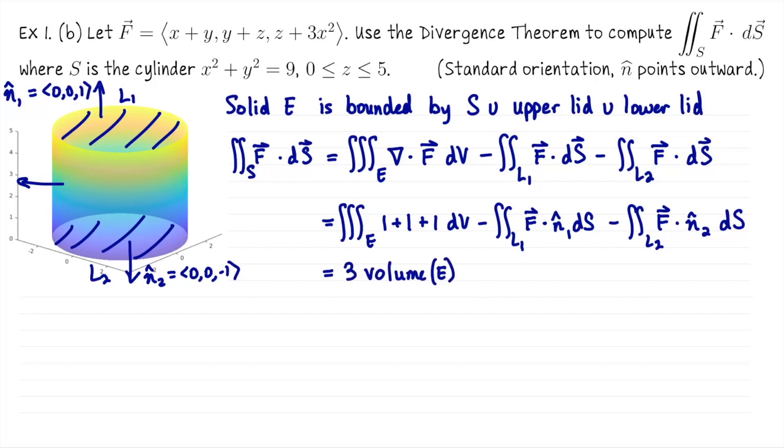Let's keep going. The first integral is 3 times the volume of the cylinder. For the second integral, n1 is the vector ⟨0,0,1⟩. When I dot that with F, I'm just extracting the third component. So that's z + 3x² dS. This is a scalar surface integral where the scalar quantity is z + 3x². And exactly the same idea for the second one, except we're dotting it with ⟨0,0,-1⟩. So that scalar integrand would be -z - 3x².